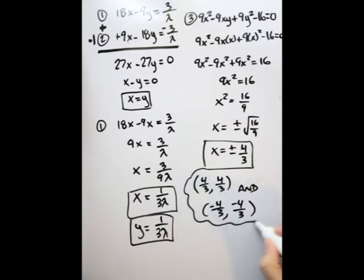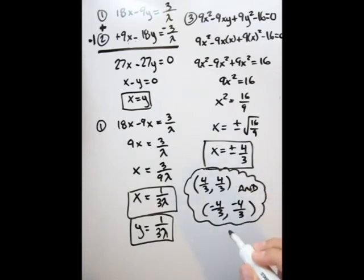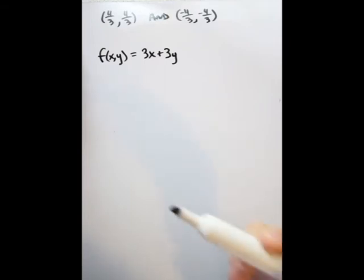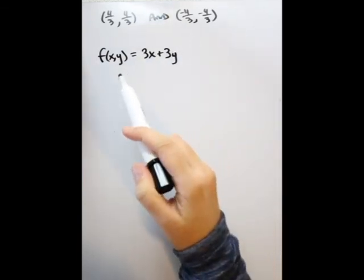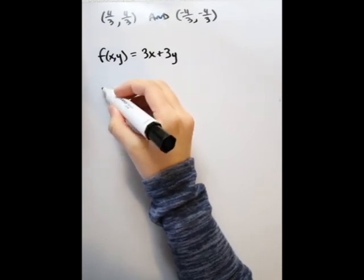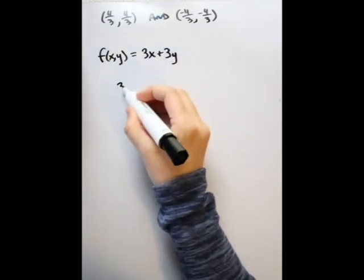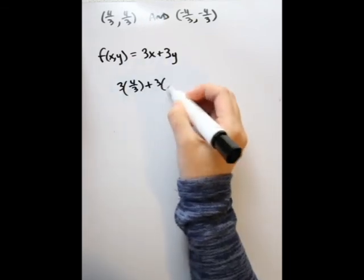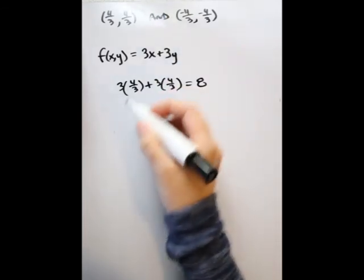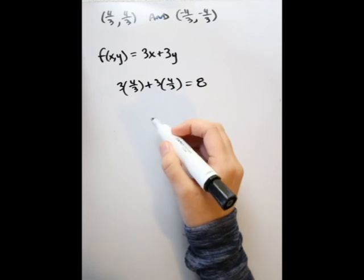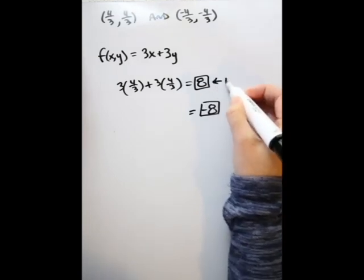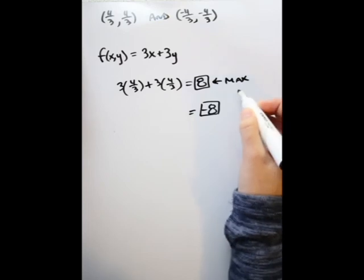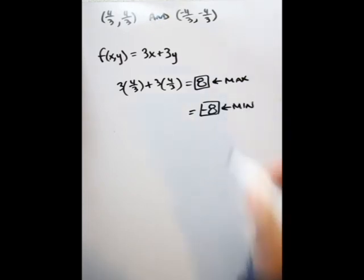From here, we take these ordered pairs and plug them back into our original object function to find the maximum or minimum. Plugging in (4/3, 4/3): 3(4/3) + 3(4/3) = 8. Plugging in (−4/3, −4/3): we get −8. So 8 is the largest value — our maximum — and −8 is the minimum value of our object function.